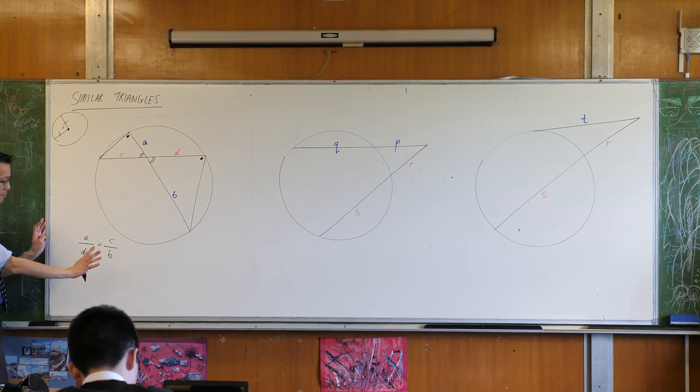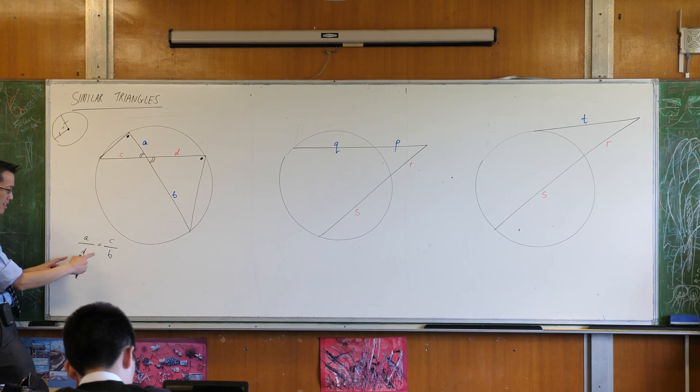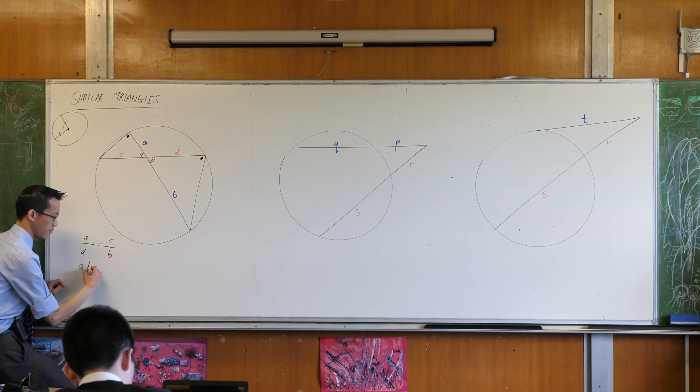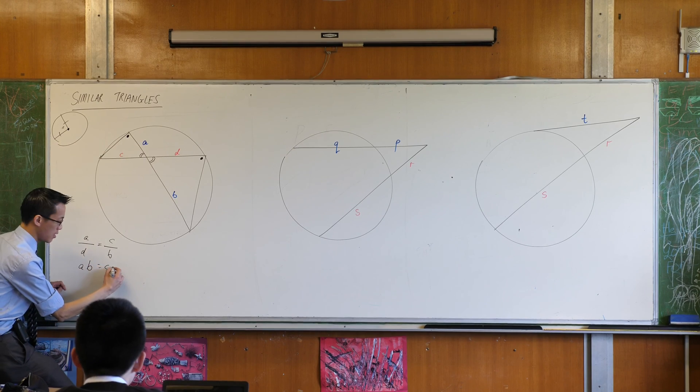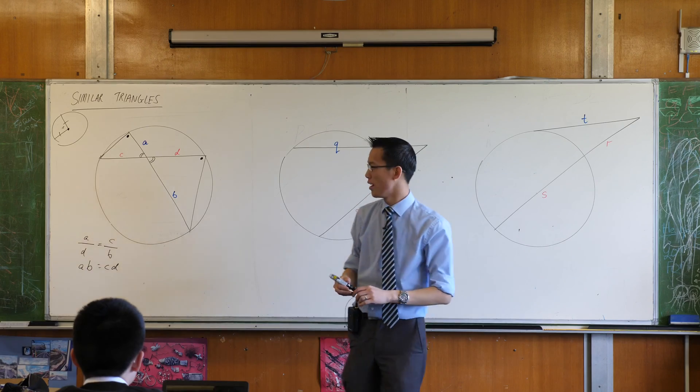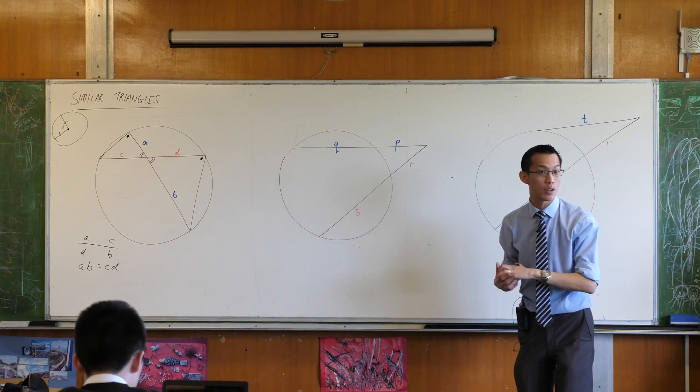Now this is true but an even nicer way to say it is to cross multiply. And you get AB equals CD. Isn't that a nice, incredibly simple relationship between all of those four different lengths.